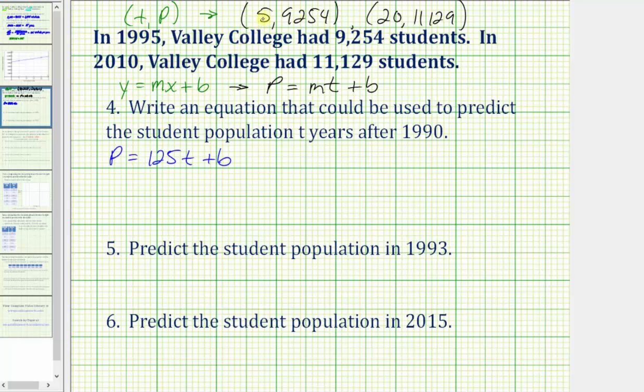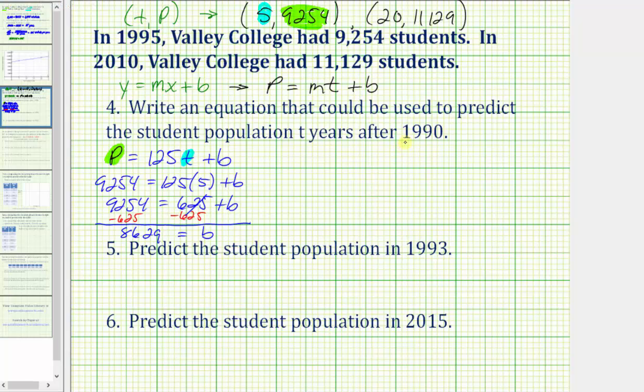Let's use the first ordered pair when t equals 5 and p equals 9254. We'll substitute 5 for t and 9254 for p. So we'll have 9254 equals 125 times 5 plus b. 125 times 5 equals 625. Now we'll subtract 625 from both sides. This would be zero, so we have b equals 9254 minus 625, which equals 8629. Which means the equation we can use to predict the student population t years after 1990 is p equals 125t plus 8629.